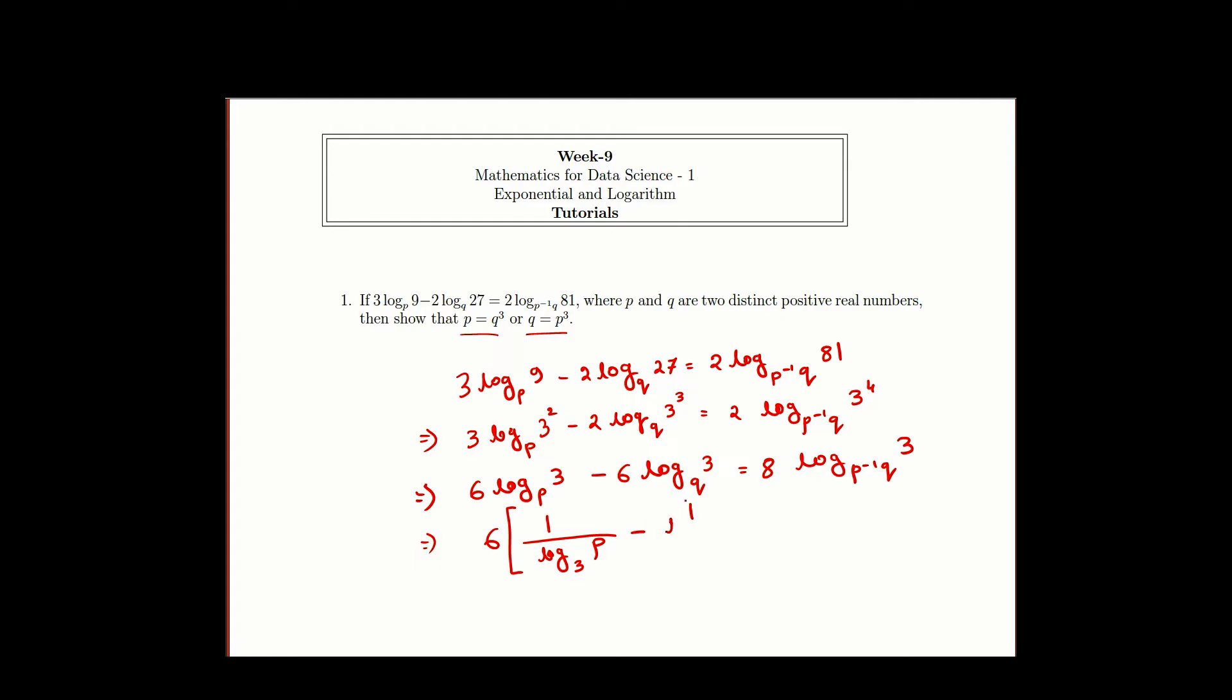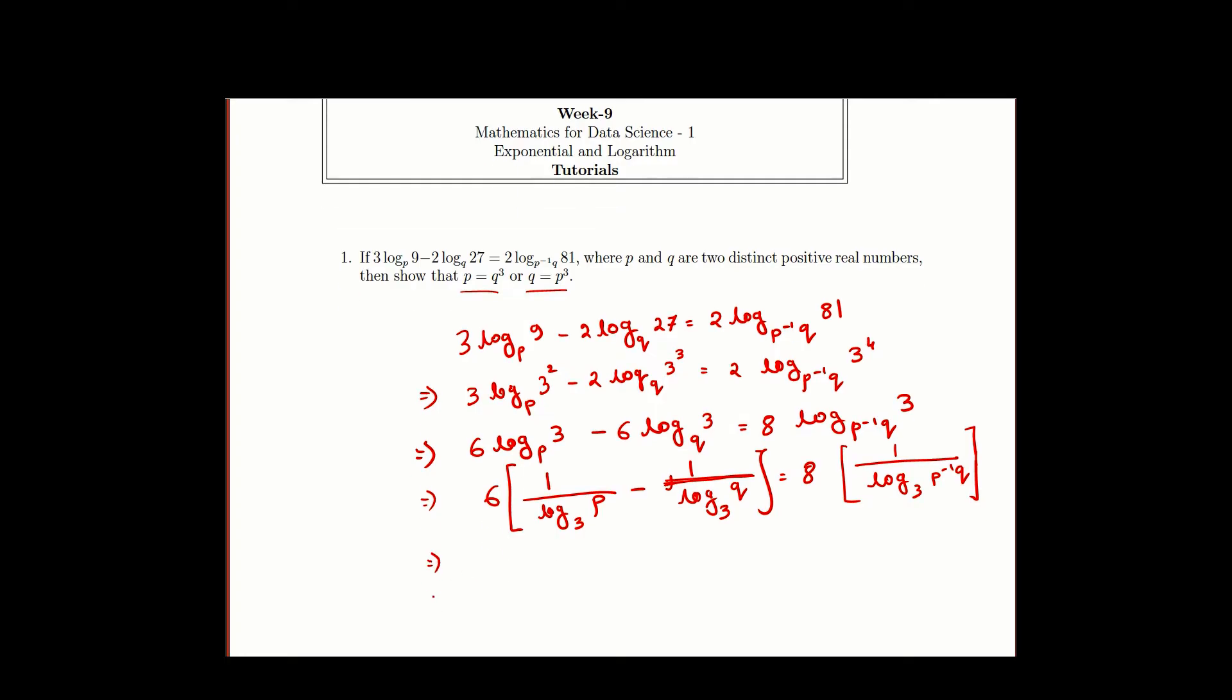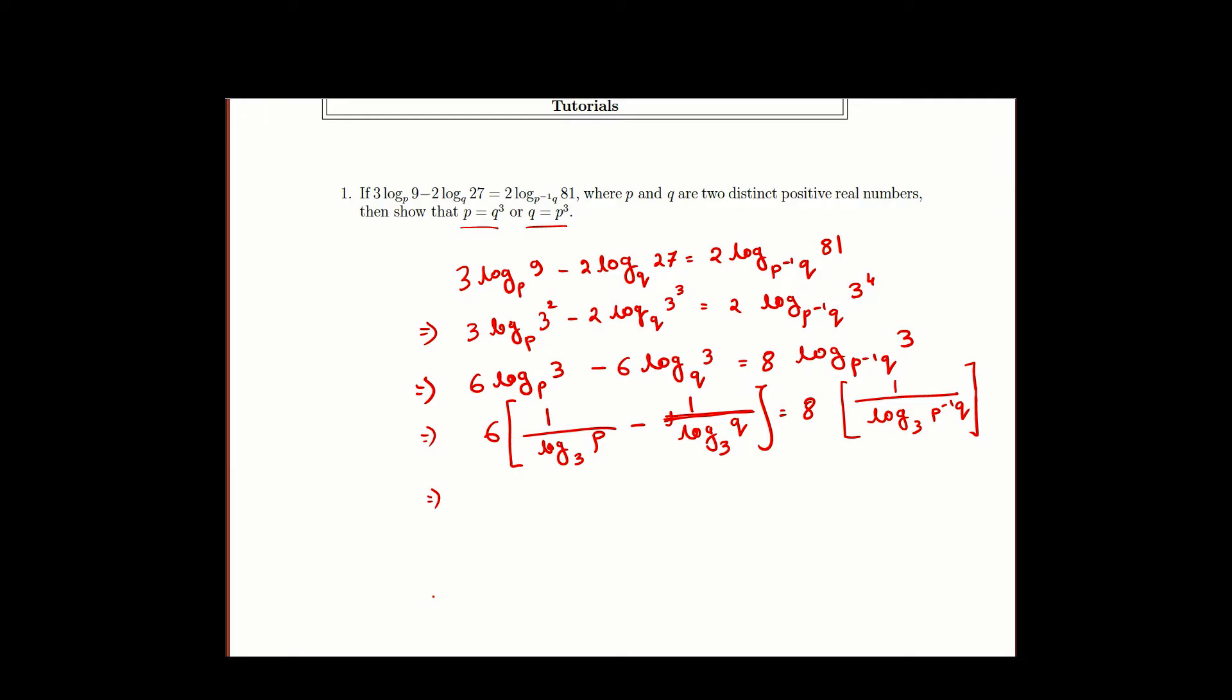Here we can write it as 1 over log_3(Q) and here it is log_(P^(-1)Q)(3) which equals 1 over log_3(P^(-1)Q). Let us see what we can do here. One more step. Here 6 cancels to 3, and here it is 4.